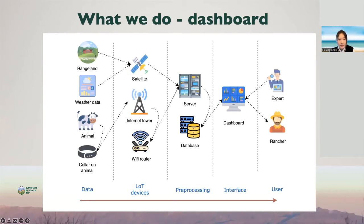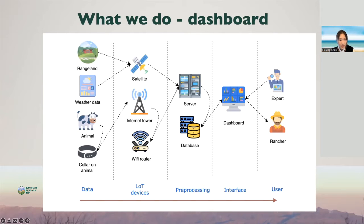Next, you can see this is our dashboard, the whole environment. The platform uses an IoT infrastructure that includes field sensors, accelerometer sensors, and GPS sensors that are mounted on animals. Those sensors gather a large amount of critical data like location and accelerometer data. This sensor data is sent to an internet tower, which sends the data back to the server.